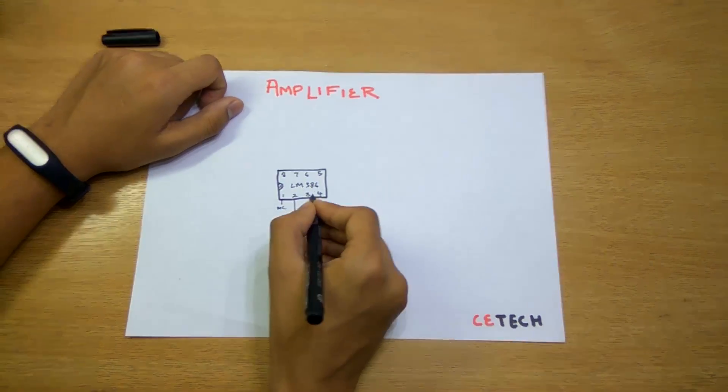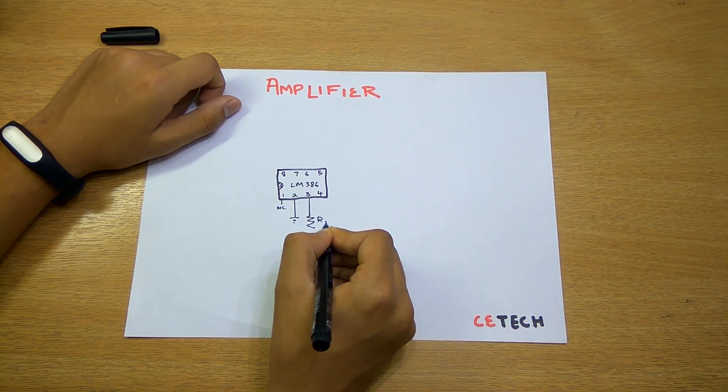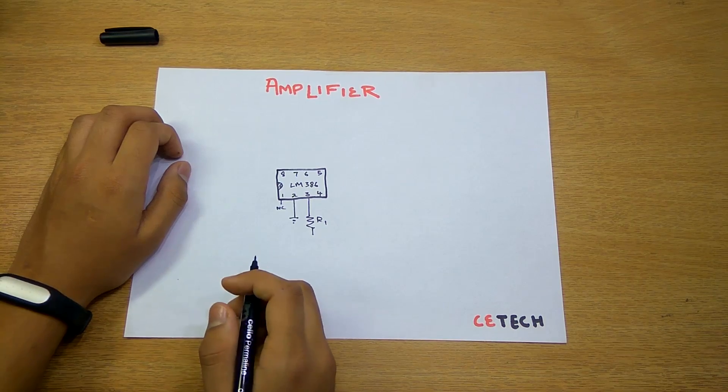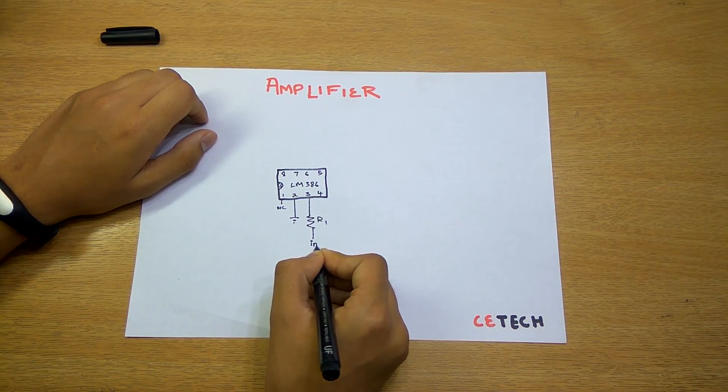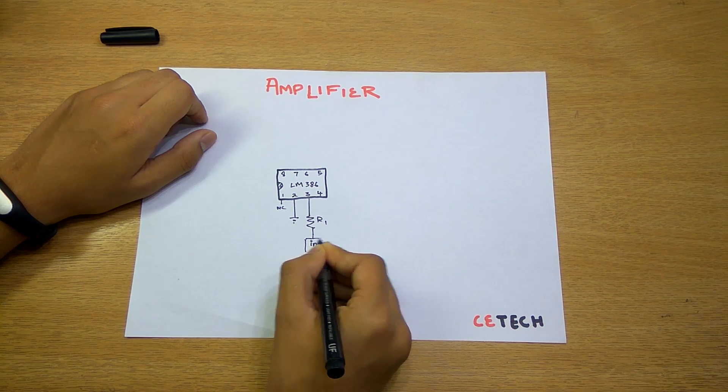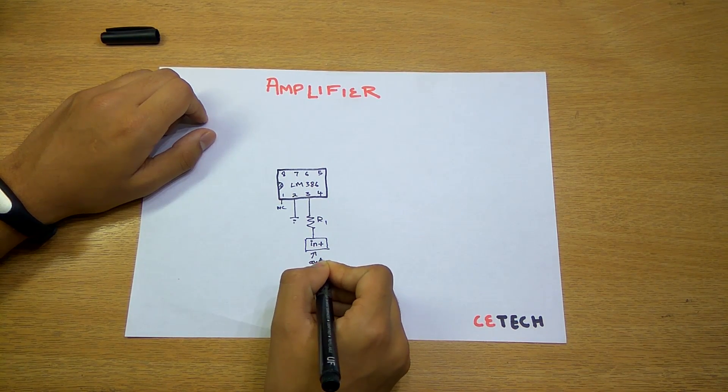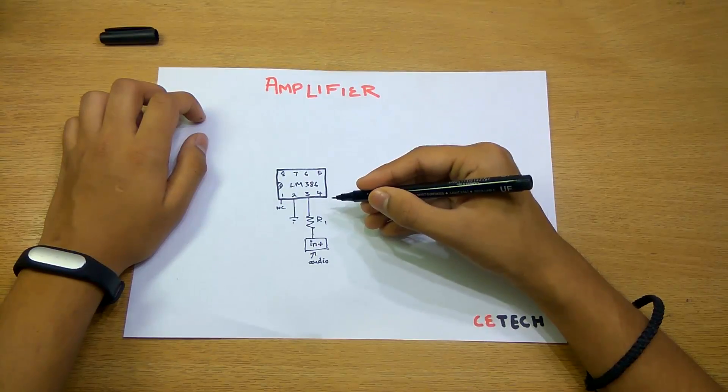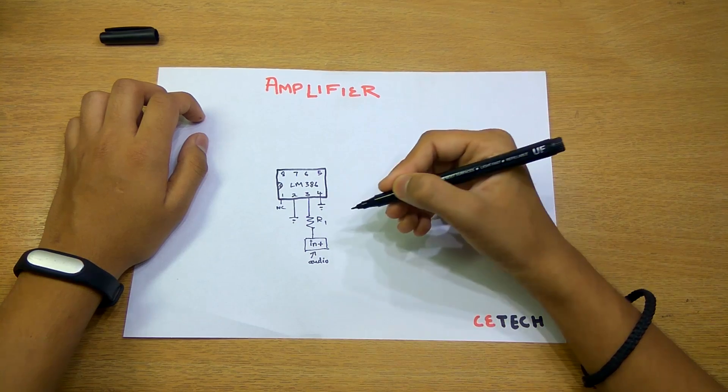The second pin will be connected to the ground. The third pin will be connected to a resistor, say R1, and in series will be connected to our positive input. This will be our audio input.